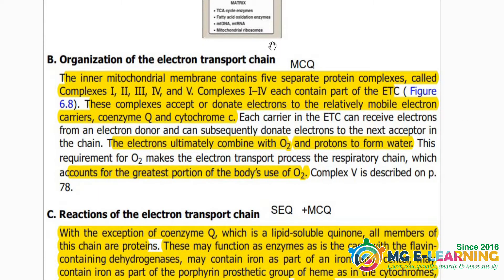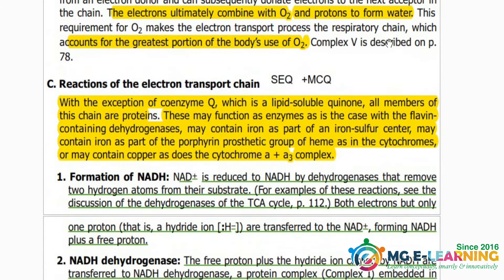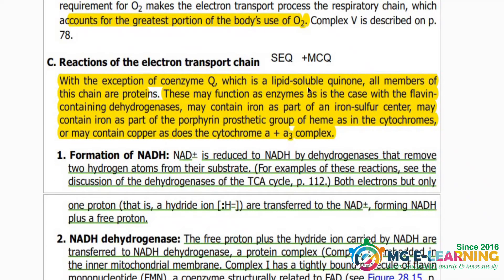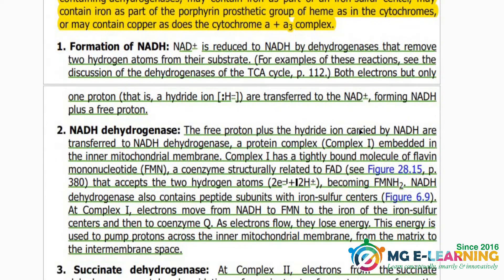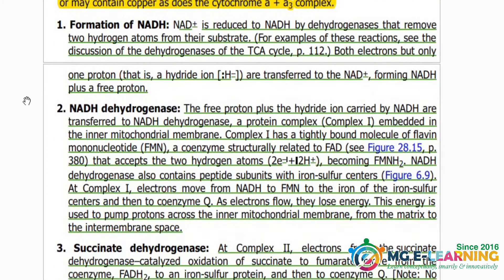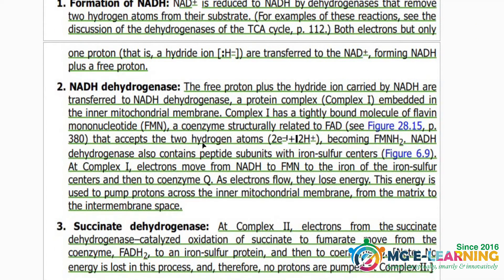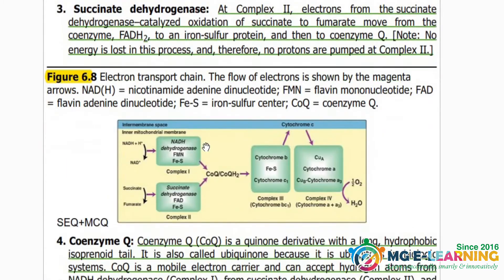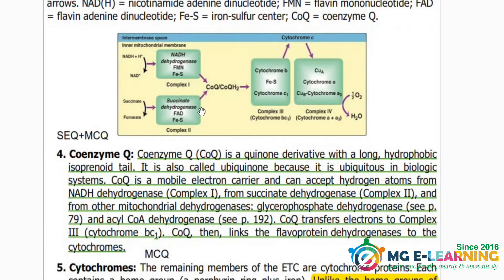The organization of the electron transport chain is important for MCQ — there are five complexes in the ETC. The reactions of the electron transport chain are important for MCQ and SQ. Formation of NADH — you have to read it for the electron transport chain; it is very important. Figure 6.8 is important to see the electron transport chain.